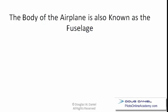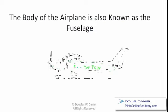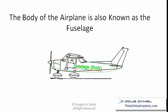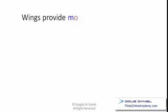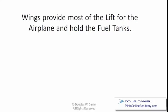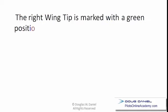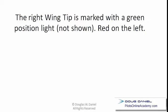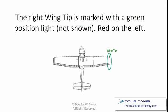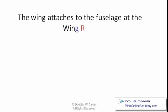The body of the airplane is also known as the fuselage. Wings provide most of the lift for the airplane — but not all — and hold the fuel tanks. The right wing tip is marked with a green position light and red on the left. The wing attaches to the fuselage at the wing root.